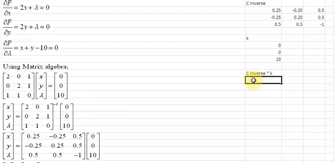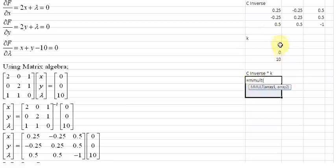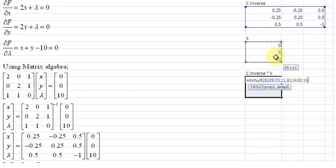So we select the region where the multiplication result is supposed to go. It is going to be a column vector, a 3 by 1 vector. We select the region and we type in our function MMULT. C inverse is going to be our first array, so we select that, comma, and the k vector is going to be our second array. We select that, close brackets, and hit ctrl shift and enter all at the same time.